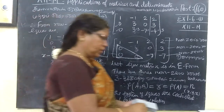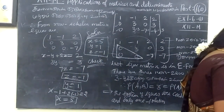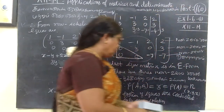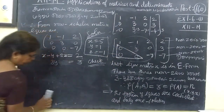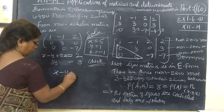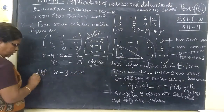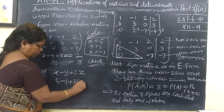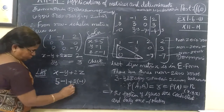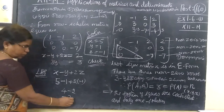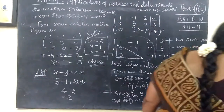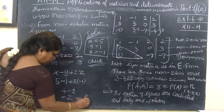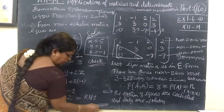We can verify using any original equation. Consider equation 1: x - y + 2z = 2. Substituting x = 5, y = 1, z = -1: 5 - 1 + 2(-1) = 5 - 1 - 2 = 2. LHS equals RHS, so the answer is correct.